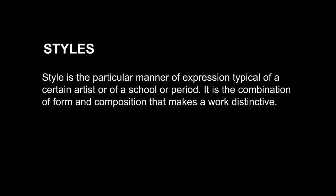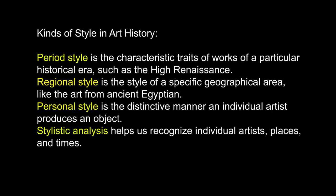On the other hand, style is the particular manner of expression typical of a certain artist or of a school or period. It is the combination of form and composition that makes a work distinctive. There are different kinds of style in art history. Period style is the characteristic traits of works of a particular historical era, such as the High Renaissance. Regional style is the style of a specific geographical area, like the art of ancient Egypt. Personal style is the distinctive manner an individual artist produces an object. Stylistic analysis helps us recognize individual artists, places, and times.